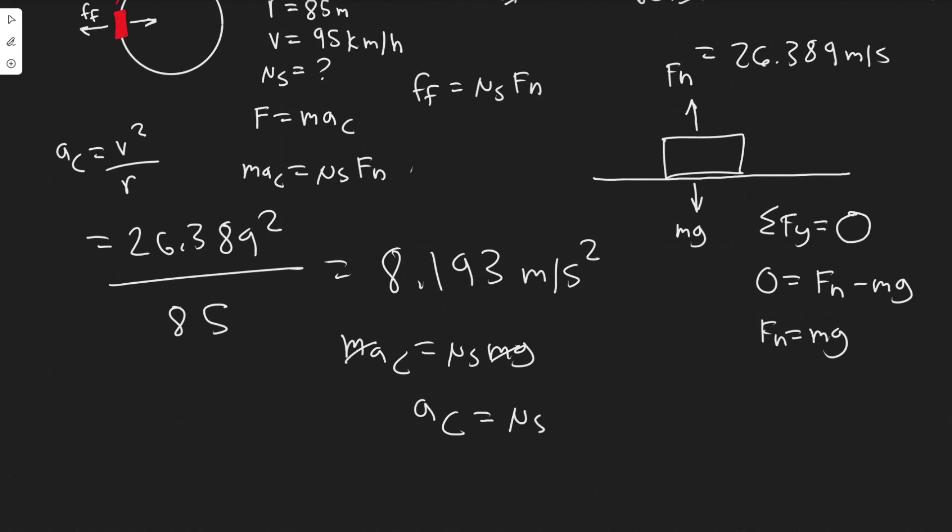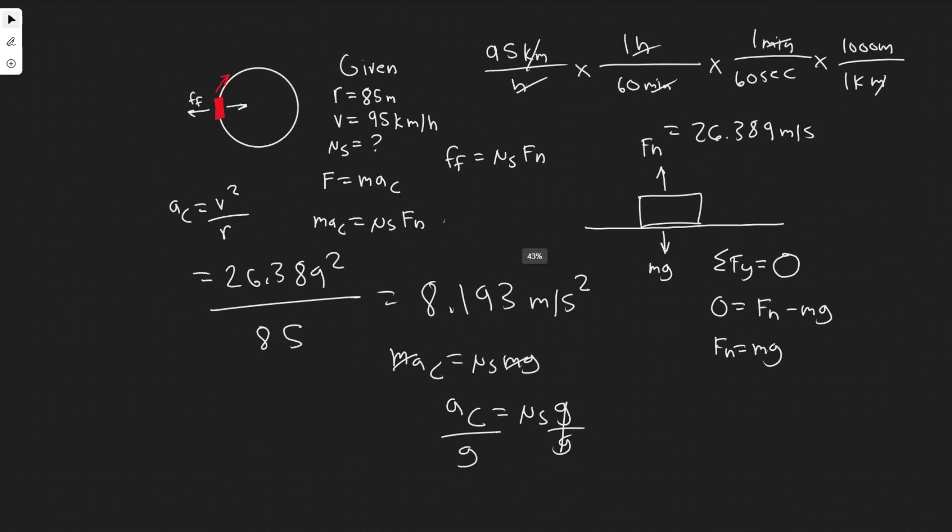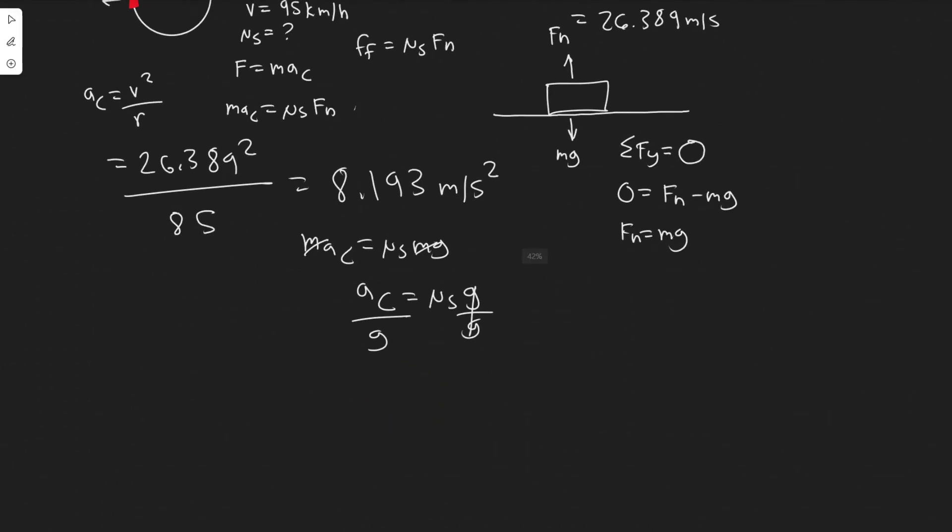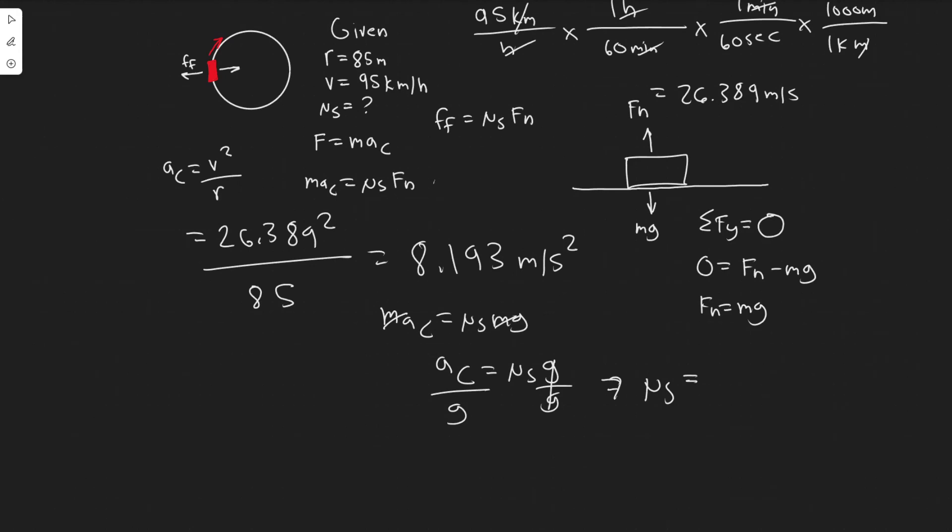Dividing both sides by g, this tells us that the required coefficient of static friction equals the centripetal acceleration divided by acceleration due to gravity. This is actually going to be the formula for all of them. If you have a curve problem like this, just know it's this.